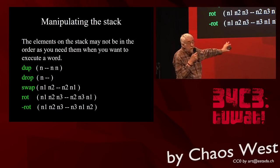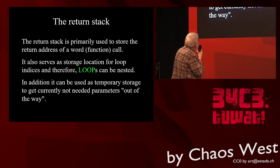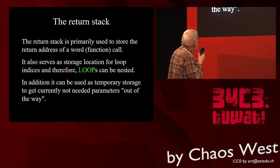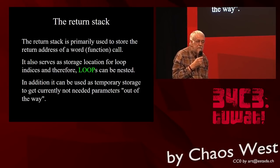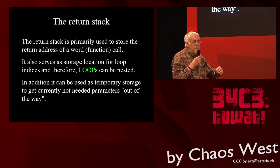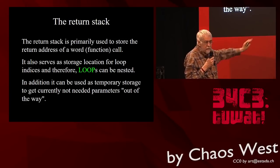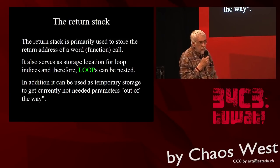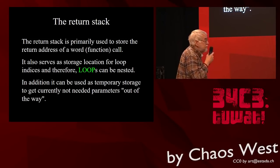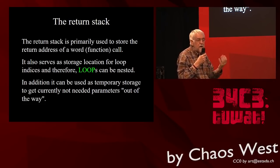We also have the second stack: the return stack. The return stack is primarily used to store return addresses for a word or function call. It also serves as a storage location for loop indices, and therefore it is very easy in Forth to nest loops. If you are inside a loop and you do a call, then automatically the old loop index gets pushed further down on the return stack, and the return automatically retrieves the loop index. In addition the return stack can be used as temporary data storage to get some parameters out of the way which are currently not being used.